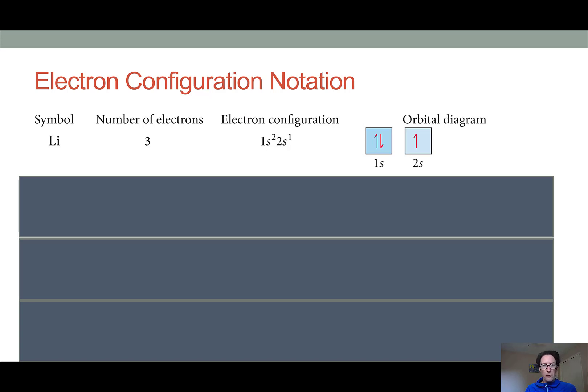So using the Aufbau principle and the Pauli exclusion principle, we're going to begin adding those three electrons into our known energy levels, starting with the lowest energy and adding two electrons per orbital until we've used up all of our electrons. So we can show that two ways, either by writing an electron configuration, as shown here, or with an orbital diagram, as shown here.